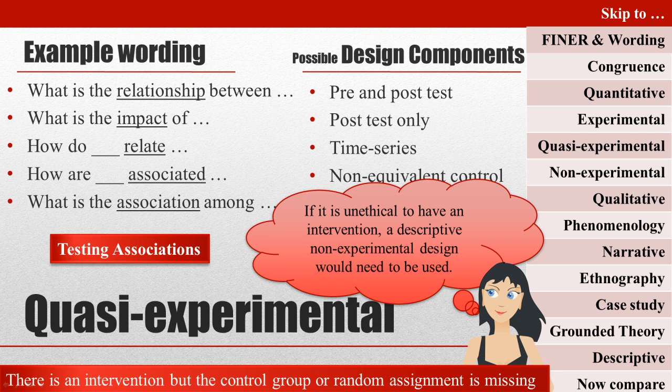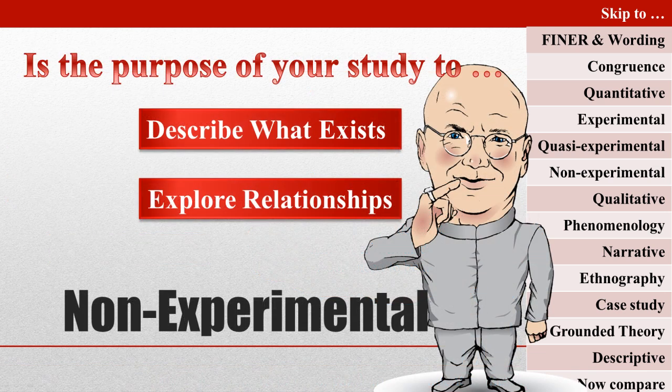Most studies about cause and effect relationships are experimental or quasi-experimental. However, when it is impossible to do an experimental study, there are some descriptive non-experimental designs that may be used to explore possible relationships among variables. Descriptive non-experimental studies simply describe something that already exists — they measure variables of interest to describe them through quantifying them. Quantitative descriptive research may more specifically aim to describe what exists or to explore possible relationships among variables.